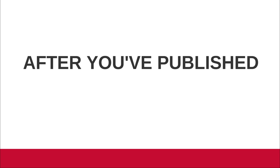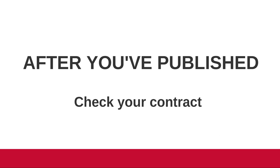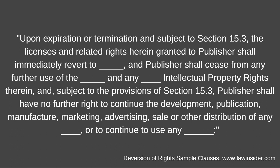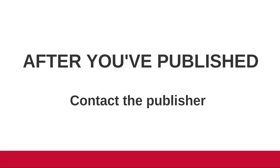After you've published your work, you do still have some options for getting your copyright back. One way is through the use of a rights reversion clause or termination clause in your contract. Rights reversion clauses allow authors to get their copyright returned after a certain number of years, if their book goes out of print, or if your publisher never actually publishes your work — it happens! An example of a rights reversion clause is shown on this page. If you don't see any clauses like this one in your contract — and remember the wording may not be exactly the same — you may still be able to terminate your contract and retrieve your copyright.